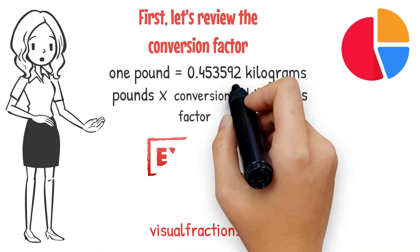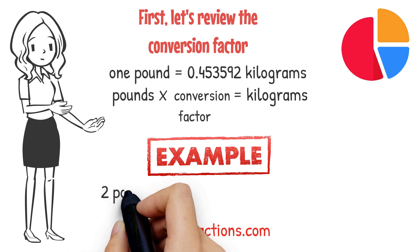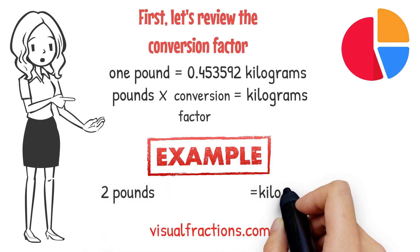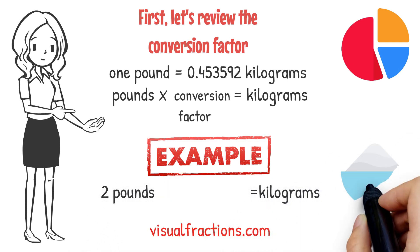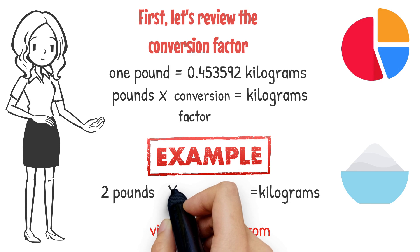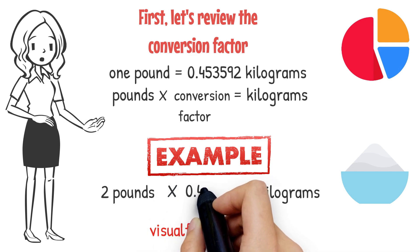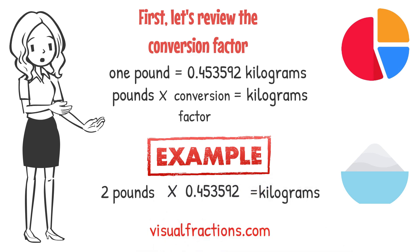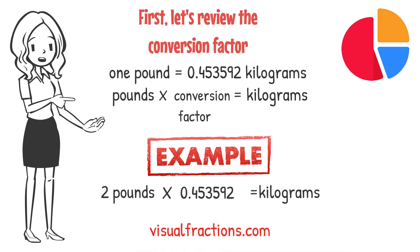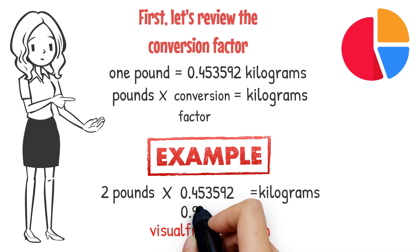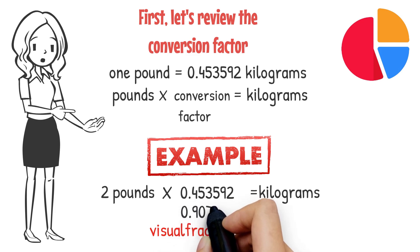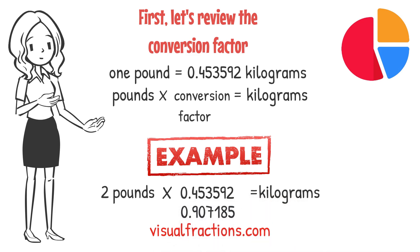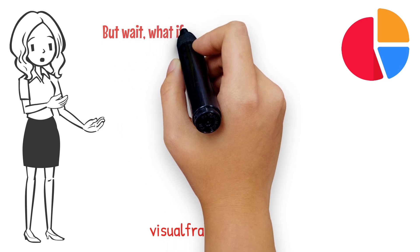Let's walk through an example. Say you have two pounds of flour that you need to convert to kilograms. We start by multiplying two by the conversion factor of 0.453592. This gives us approximately 0.907185 kilograms.